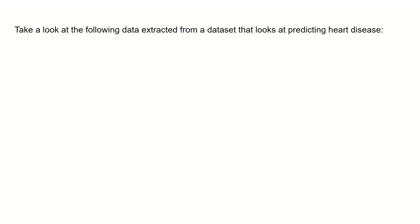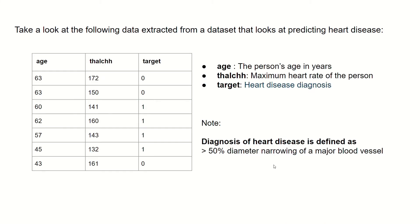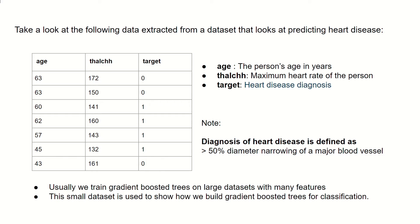Take a look at the following data extracted from a dataset that looks at predicting heart disease. Here we're given age, which is the person's age in years, Thal-CHH, which is the maximum heart rate of the person, and also the target, which is heart disease diagnosis. Note that diagnosis of heart disease is defined as larger than 50% diameter narrowing of a major blood vessel. Usually, we train gradient-boosted trees on large datasets with many features. This small dataset is used to show how we build gradient-boosted trees for classification.